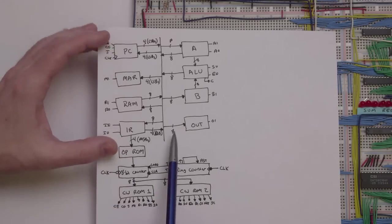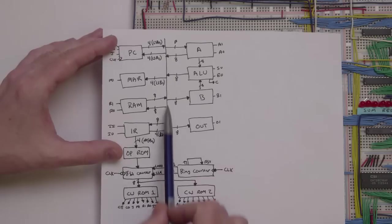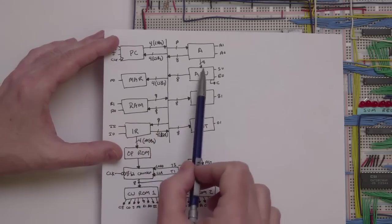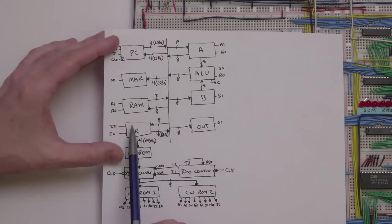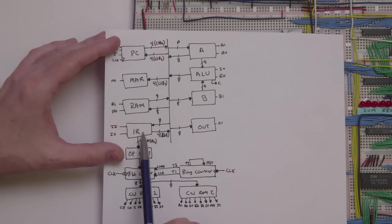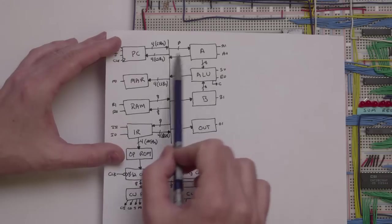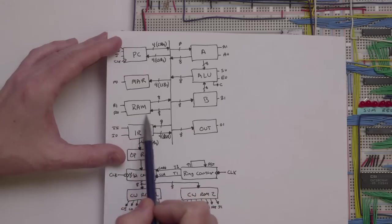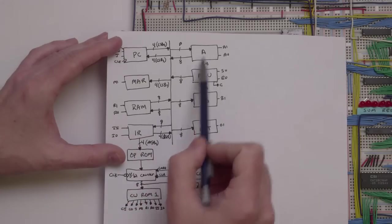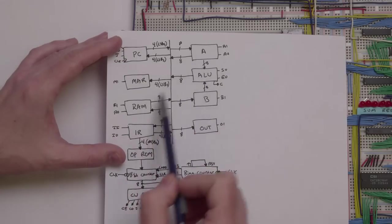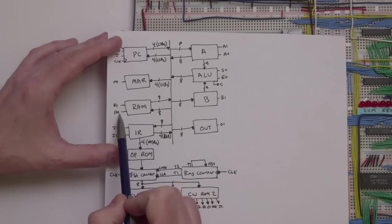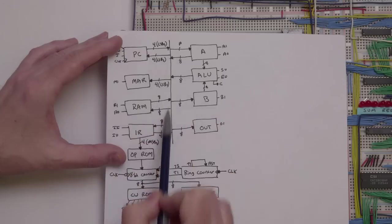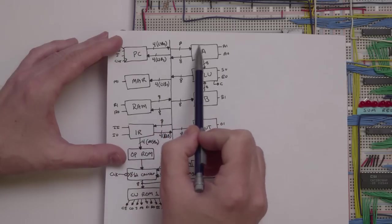This is a central 8-bit bus that all of these different components are connected to. What this does is it lets us move information from any component to any other component through this bus. For example, if you want to take data from RAM and put it into the A register, you can do that through this bus. RAM puts that information on the bus, and then the A register reads that information from the bus.